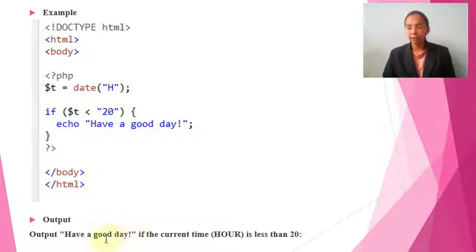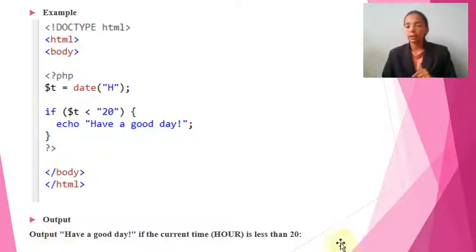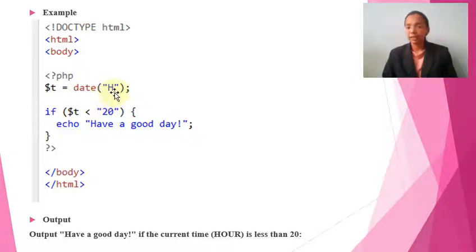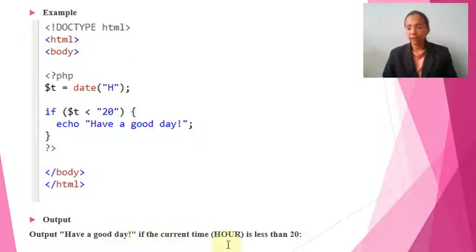What will the output be? It is generated automatically — you don't need to provide anything manually; the system date is used. The date data type takes the value of H, which gives the current hours. So the output will be 'Have a good day', because the current time — that is, the hours — is less than 20.